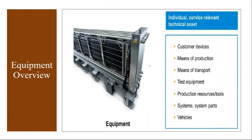So we already have a material - now why do we need to create equipment? At the material level, you cannot maintain warranty information. You cannot assign a serial number to the material. So to know the serial number, to have the warranty information, and all those things, we need to create equipment.